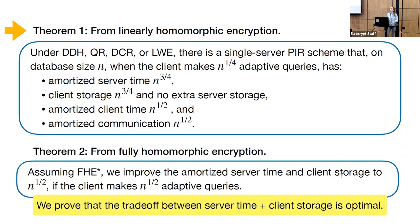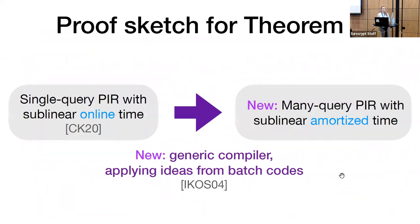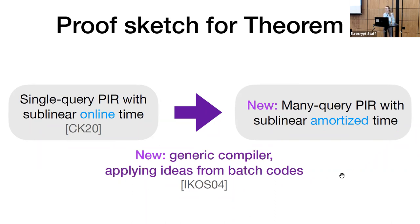I'm going to give you a quick sketch of the construction that proves Theorem 1. At a very high level, we start with a pre-existing result — that single-query private information retrieval with sublinear online time exists, proved by my co-authors. We then build a new generic compiler which takes as input a single-query PIR scheme and outputs a many-query PIR scheme that supports Q adaptive queries. This generic compiler applies ideas from batch codes, but crucially, unlike batch PIR, it lets the client make its queries adaptively. Plugging the pre-existing result into the compiler gives us a PIR scheme with many queries and sublinear amortized server time.